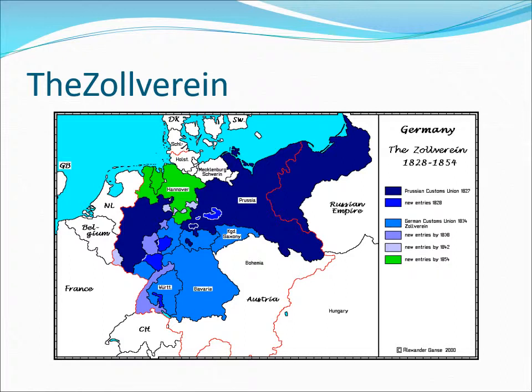Then there's the Zollverein — a Prussian-organized free trade area of unrestricted trade that included all of the German states except Austria. It promoted trade, industry, and railroad building. What people discovered was that the economic ties of the Zollverein could forge political ties, because all these states were working together.